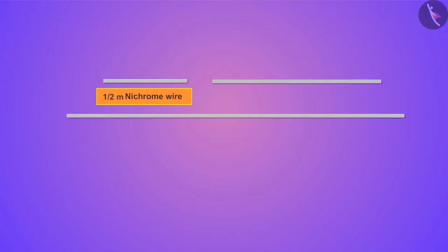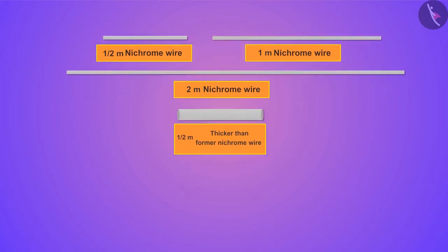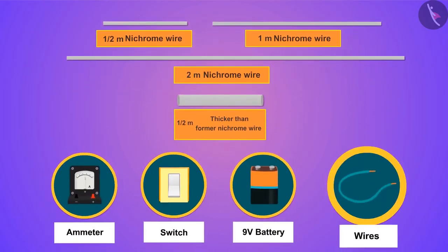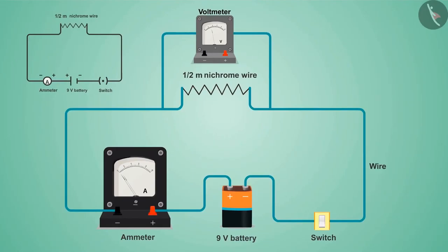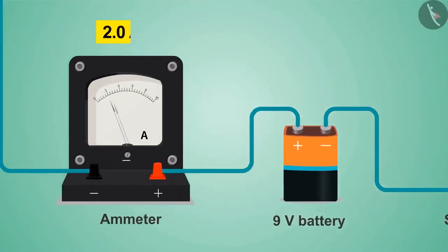To perform this activity, we need three pieces of nichrome wire having lengths of half meter, one meter, and two meters. Another wire can be taken if there is no nichrome wire — one piece half a meter long but thicker than the former nichrome wire. We also need an ammeter, a key, a 9-volt battery, and connecting wires. Connect the circuit, and as soon as we close the key after connecting the half-meter wire, we'll get a reading on the ammeter.